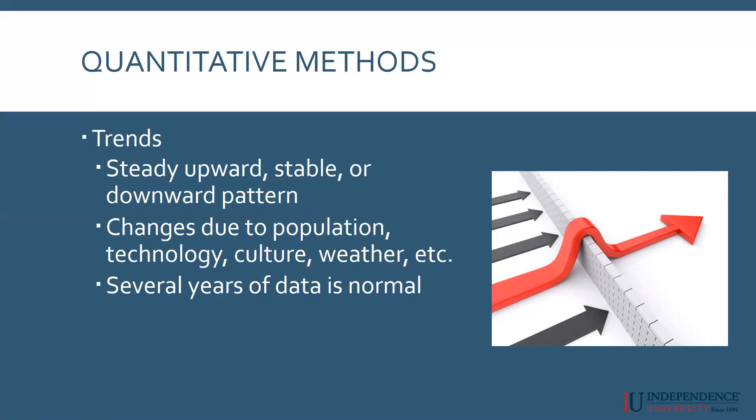Quantitative methods look at a trend first. Is the trend of your organization up, down, or stable? Are your sales year-over-year growing or declining? What would make them grow, what would make them decline? Trends can be driven by changes to the population, changes to technology, culture, or weather. You try to take all of these things into account when coming up with your forecast.